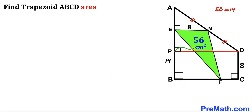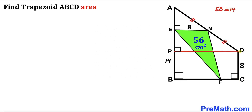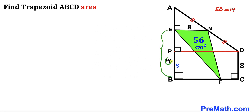Next, drop a perpendicular PD onto line AB. We can see that segment PD equals the whole segment BC, and segment CD equals segment BP. Since CD is 8 centimeters, BP is 8 centimeters as well. The whole segment EB is 14, and BP is 8, so the remaining segment EP equals 14 minus 8, which gives us 6 centimeters.